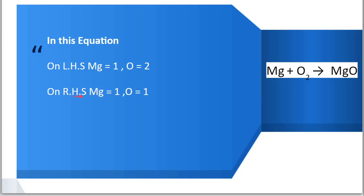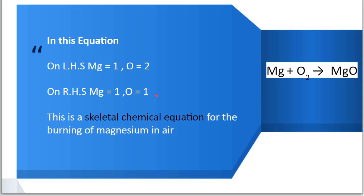On the right-hand side, magnesium is 1 and oxygen is 1. So this is a skeletal chemical equation for the burning of magnesium in air, and we can say that this equation is an unbalanced equation because the number of atoms on the left-hand side is not equal to the number of atoms on the right-hand side.